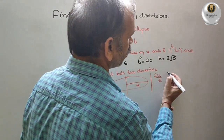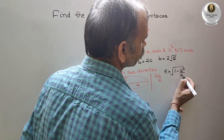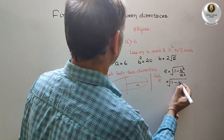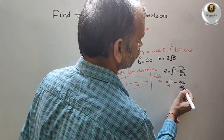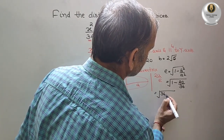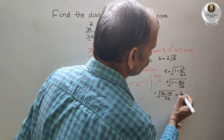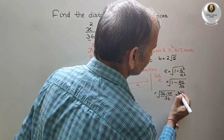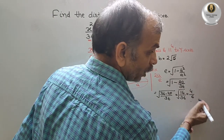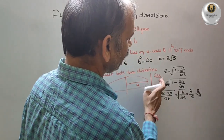e is equal to √(1 - b² / a²). Substituting the values: e = √(1 - 20/36) = √(16/36) = 4/6 = 2/3. So e is 2/3.